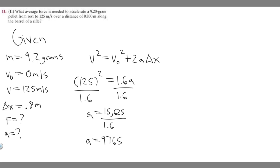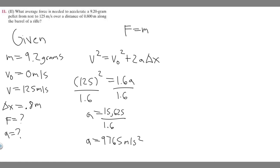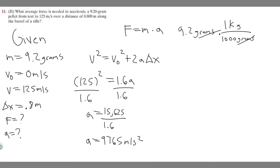Keep in mind acceleration is measured in meters per second squared. Now, force equals mass times acceleration. Force is measured in newtons, so mass must be in kilograms. Our mass is in grams, so we need to convert: 9.2 grams divided by 1,000 gives us 0.0092 kilograms.